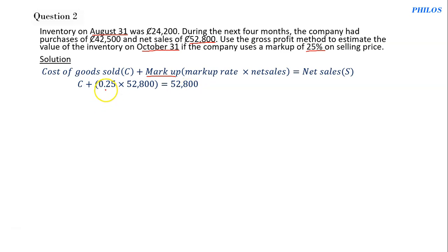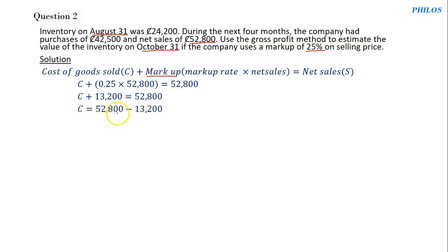When you take 0.25 times 52,800 you get 13,200. So the equation becomes C plus 13,200 equals 52,800. Bringing 13,200 to the other side: C equals 52,800 minus 13,200, which gives C equals 39,600. So 39,600 is the cost of goods sold.